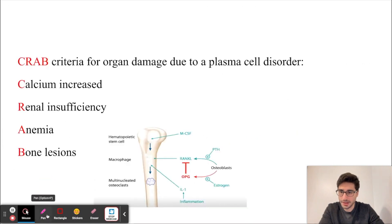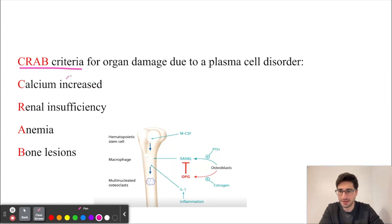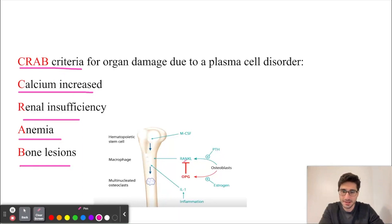The mnemonic to remember the important associations with multiple myeloma is the CRAB criteria: an increase in Calcium, Renal insufficiency, Anemia, and Bone lesions. We have bone lesions and increased calcium because in multiple myeloma there is increased production of RANK ligand, which increases the production of osteoclasts. Osteoclasts then resorb bone, causing bone lesions, and when bone is resorbed, calcium is released — resulting in hypercalcemia.